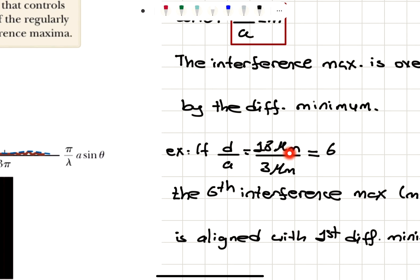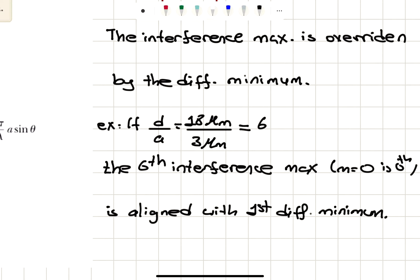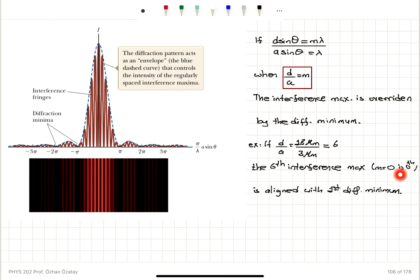For example, if we have d = 18 micrometers and A = 3 micrometers, d/A = 6. That implies the 6th interference maximum — where m = 0 is the 0th maximum in the double slit interference — is aligned with the first diffraction minimum, so it will be overridden.